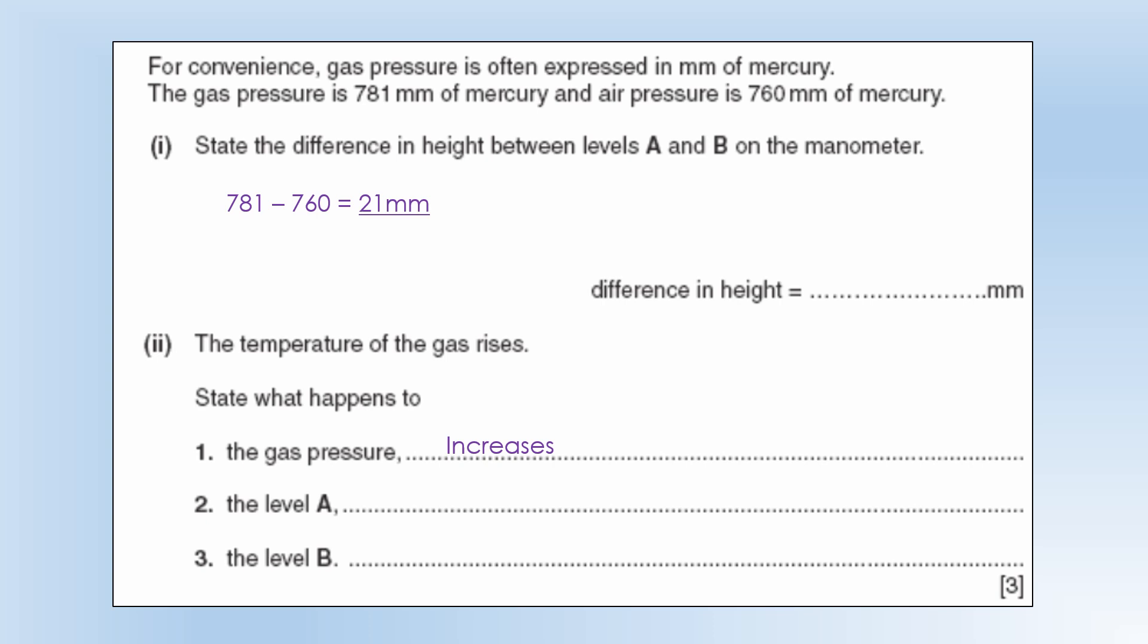Okay so if the pressure inside the container rises the level of a goes down because there's higher pressure above it and therefore b goes up because we haven't lost any mercury. So if it's gone down on one side it has to go up on the other.